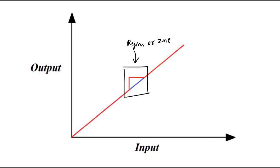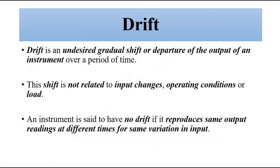So drift is an important concept related to the input-output relationship of a measuring system and one of the important static performance characteristics. I hope you like this video — please subscribe to Engineering Tutorial for more videos related to engineering, science, and technology. Have a great day, thank you very much.